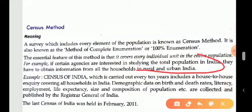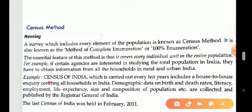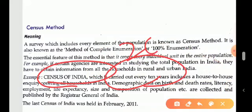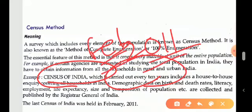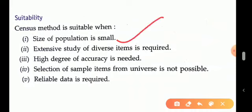For example, to study India's total population, information must be collected from every rural and urban area. India's census happens every 10 years — 2011 being one such year — and information is collected house by house by the Registrar General of India. No household in the population is left out. Census is suitable where the population size is small.